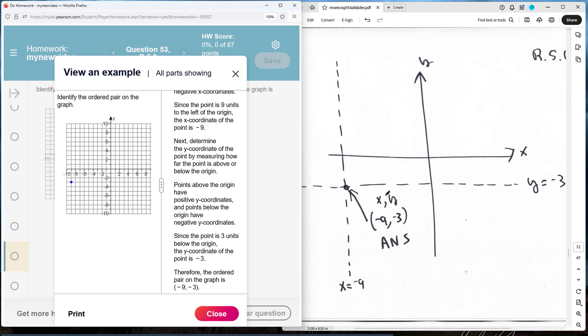The intersection of those two lines is the point, negative 3, negative 9. That is the location of the point.